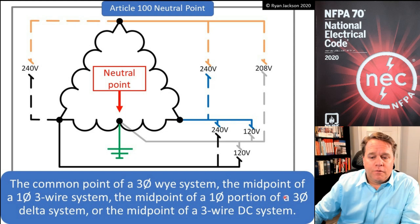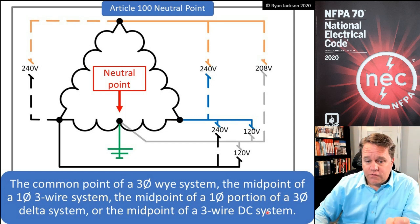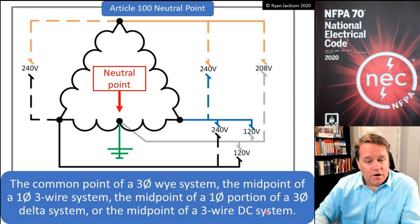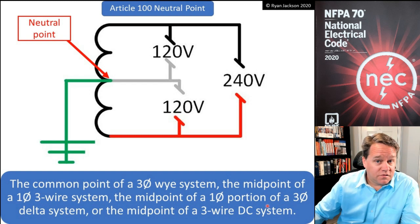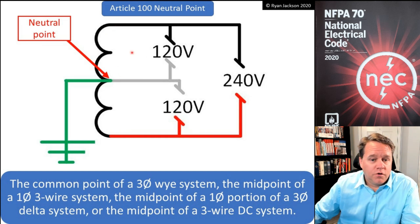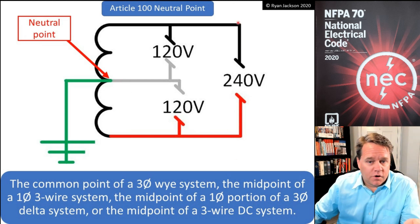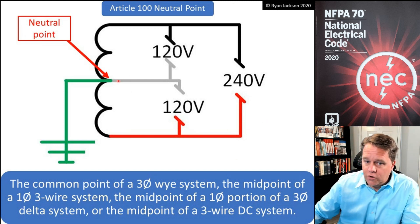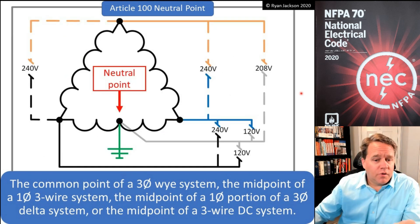We also have the midpoint of a single-phase three-wire system. On a single-phase system, it's 120 volts from one ungrounded conductor to the neutral point, 120 volts from the other ungrounded conductor to the neutral point, and 240 volts across the two phases. That midpoint would be our neutral point.